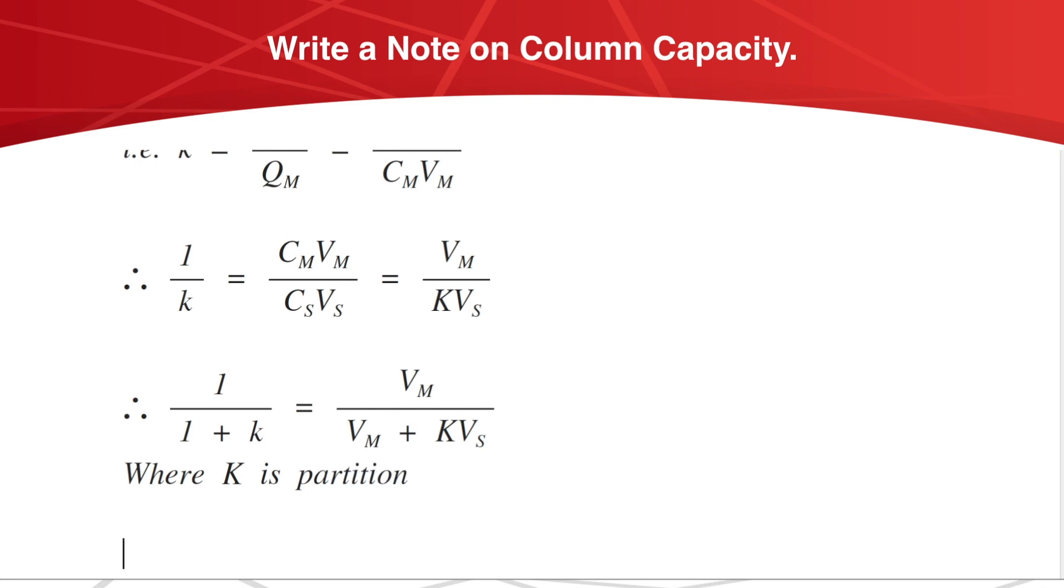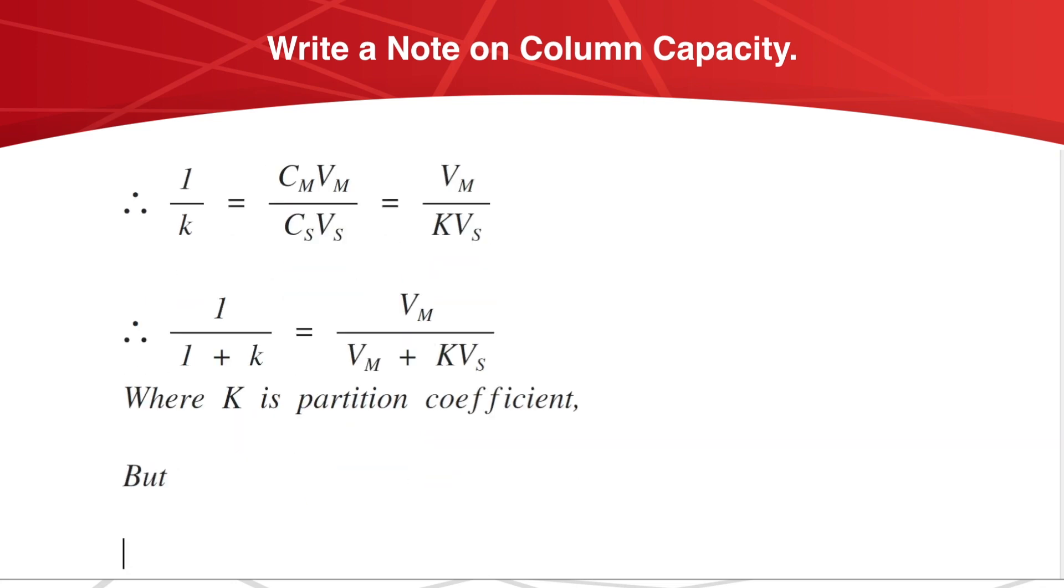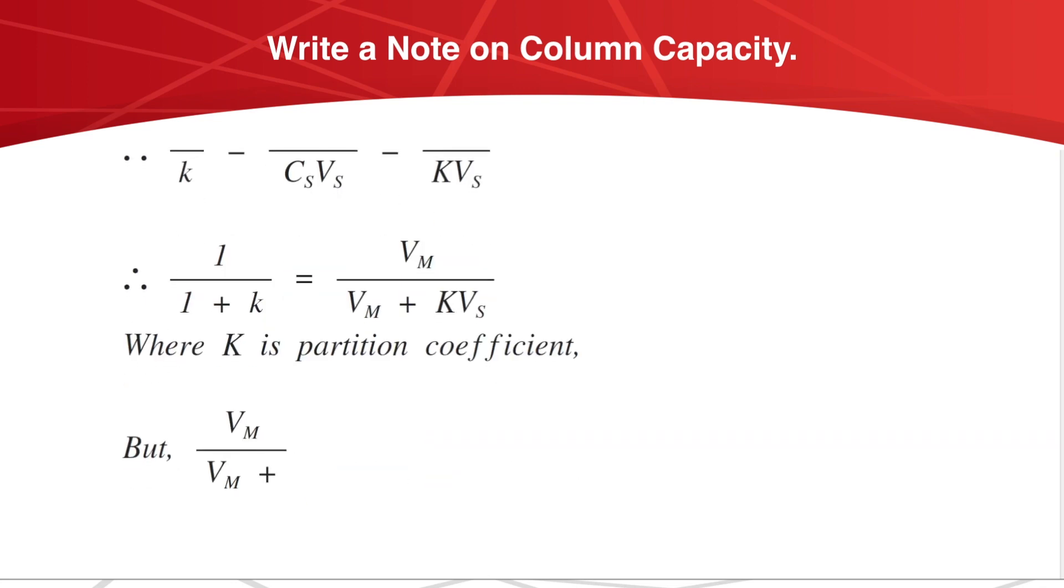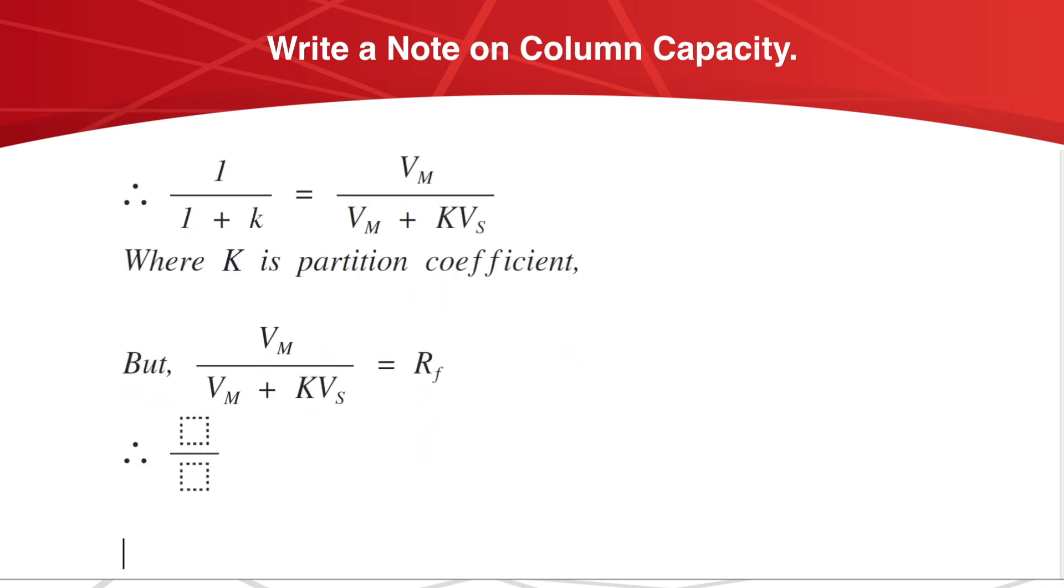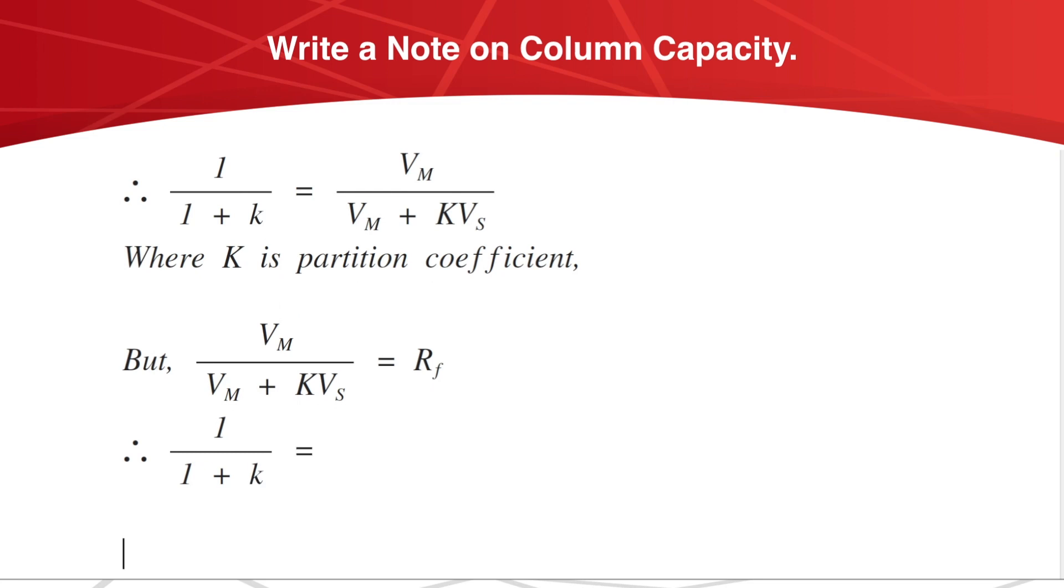Where K is partition coefficient, but Vm divided by Vm plus K Vs equals Rf, which is retention factor. Therefore, 1 by 1 plus k equals Rf.